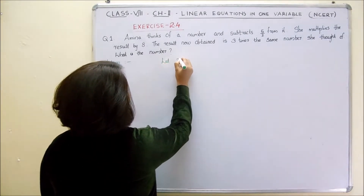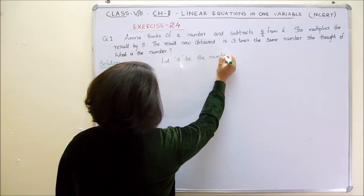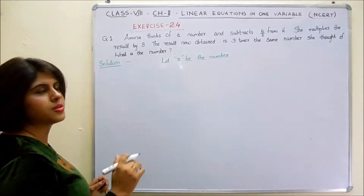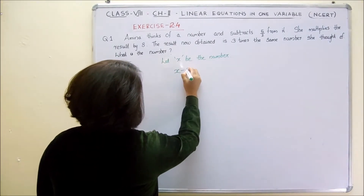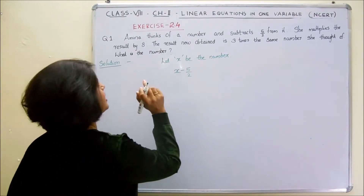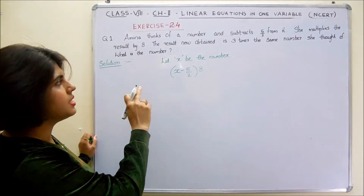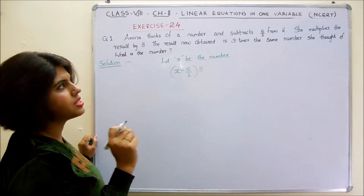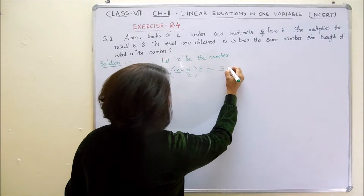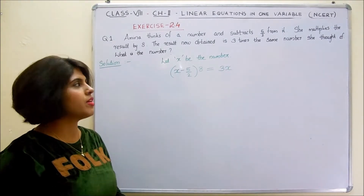Let x be the number. Then she subtracts 5 by 2 from it, so the expression would become x minus 5 by 2. She multiplies the result by 8 — the whole result multiplying by 8. The result now obtained is 3 times the same number she thought of, which is equal to 3 times x.